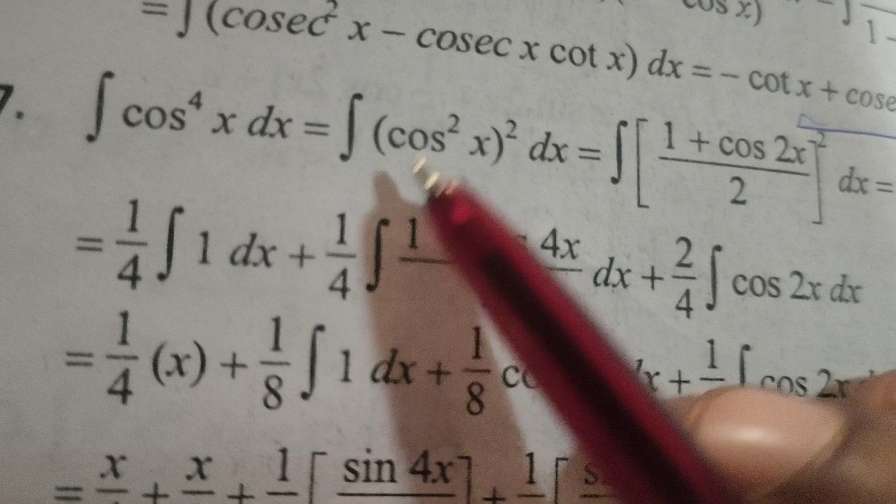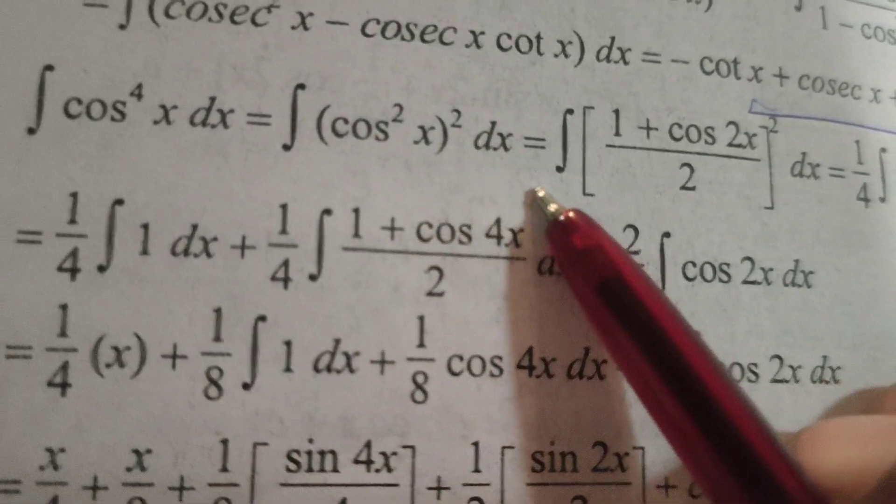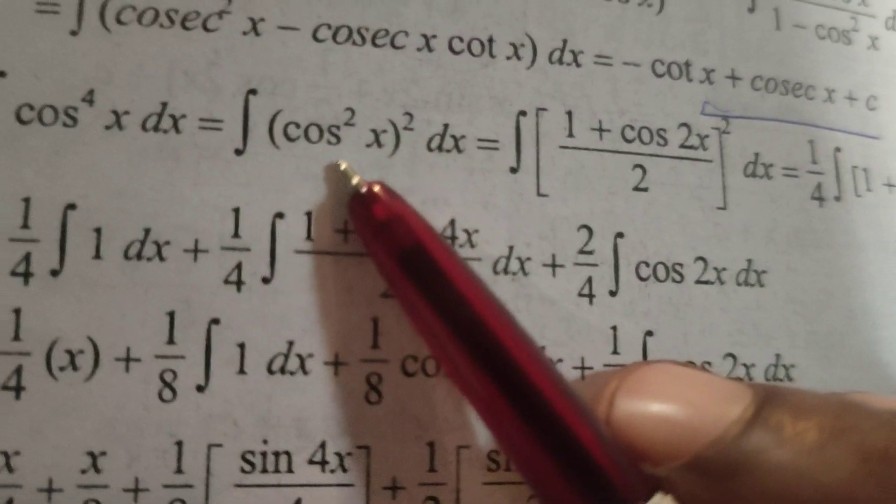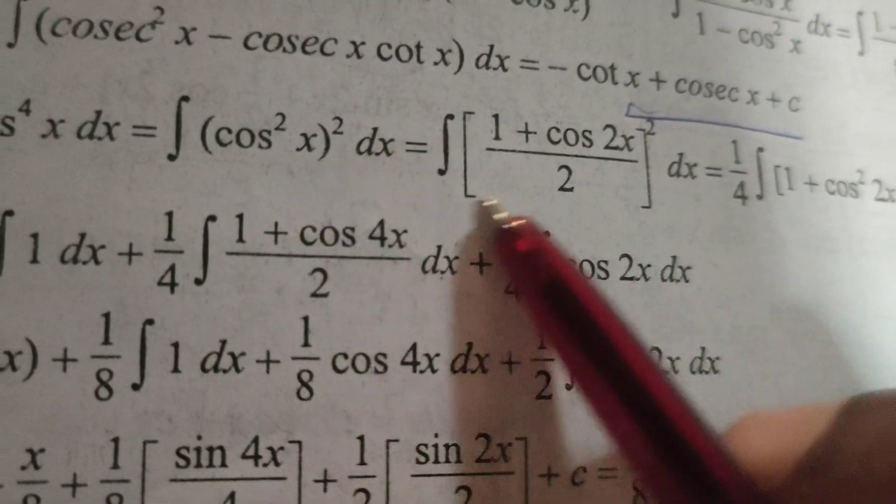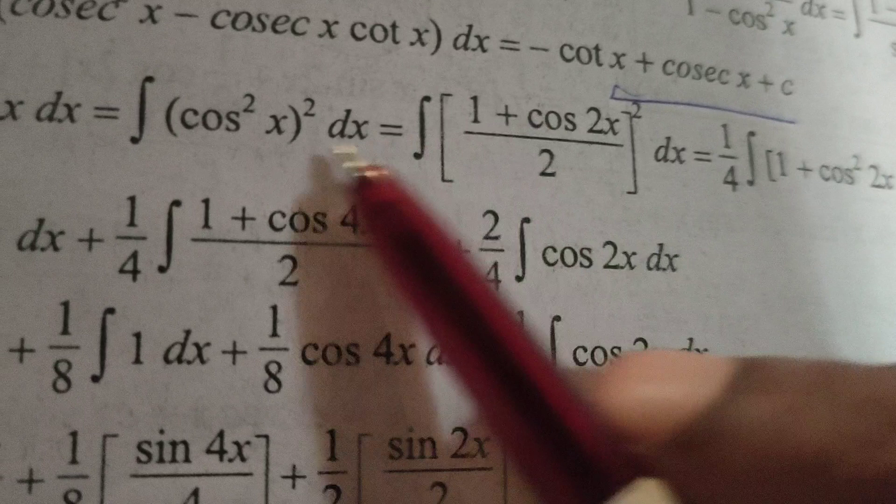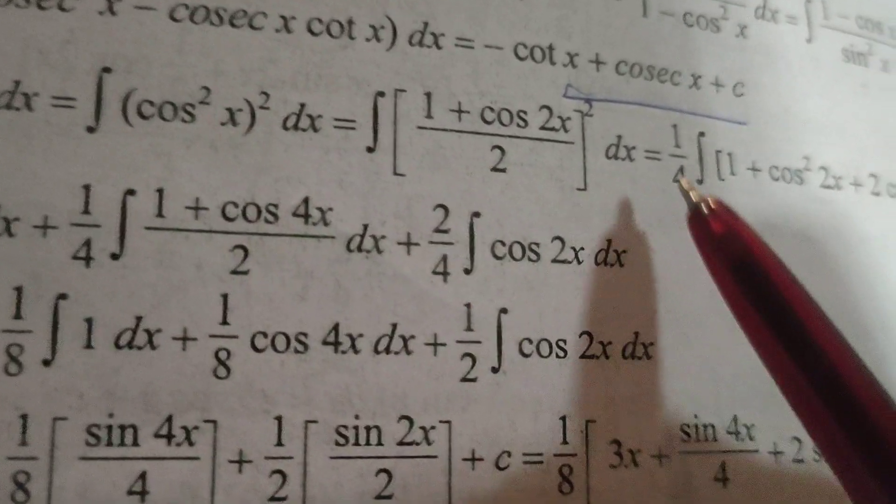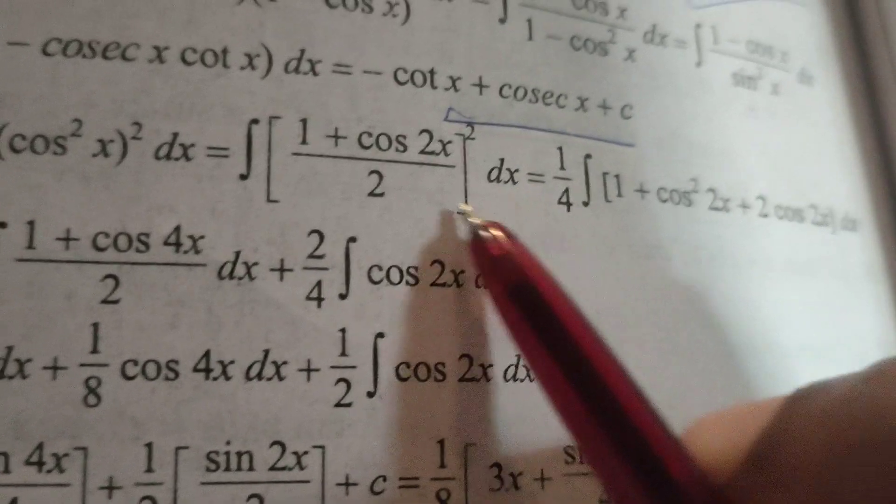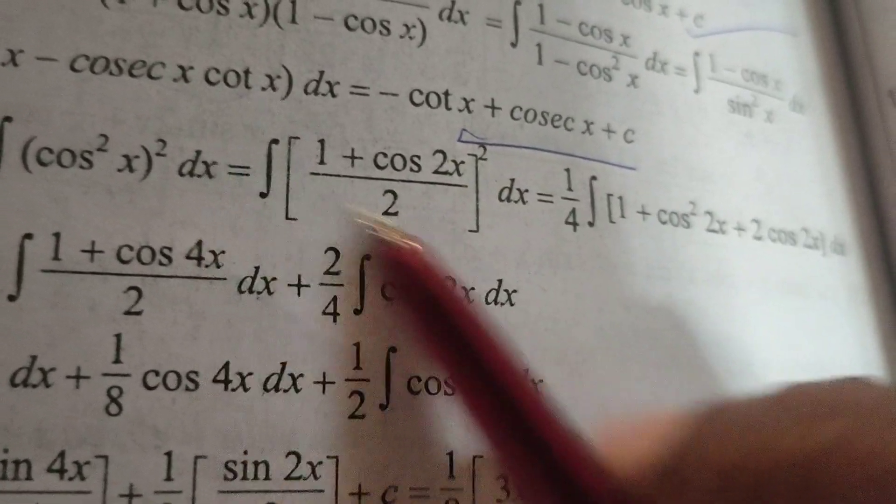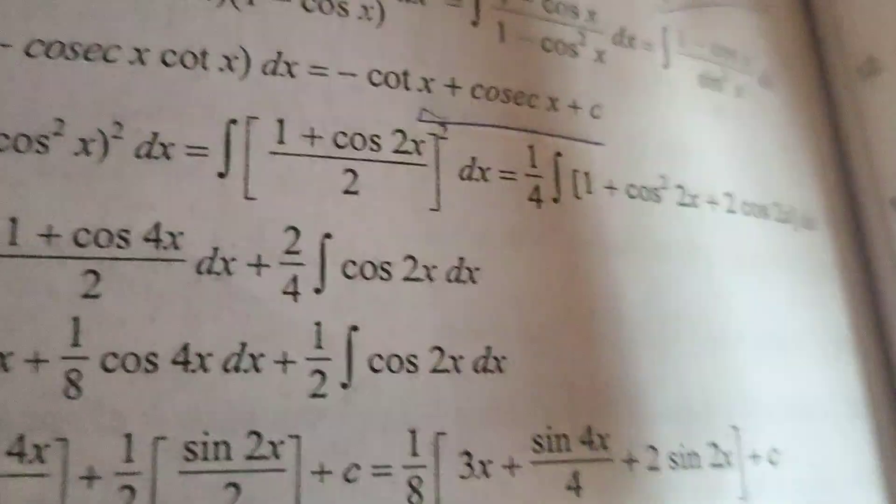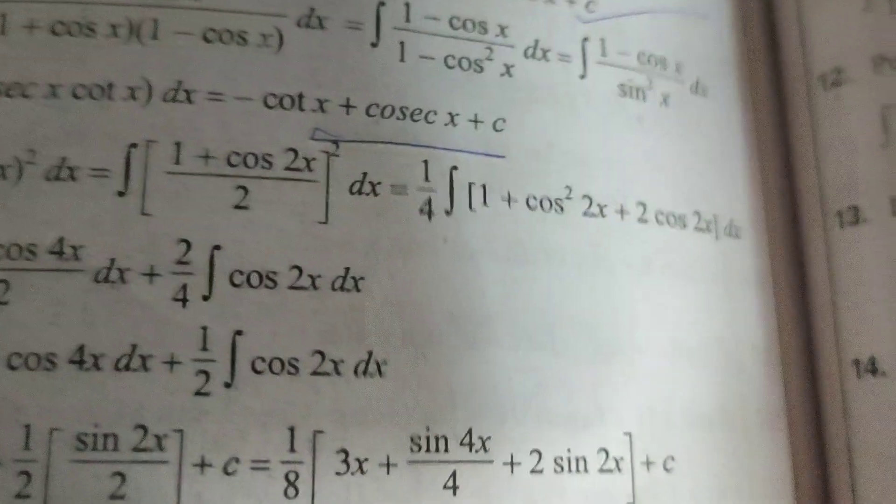Now write here cos squared x whole squared dx. Using the trigonometric formulae for integration, cos squared x means 1 plus cos 2x by 2, whole squared into dx. Here 2 squared means 1 by 4. So 1 by 4, write integral of 1 plus cos 2x whole squared.